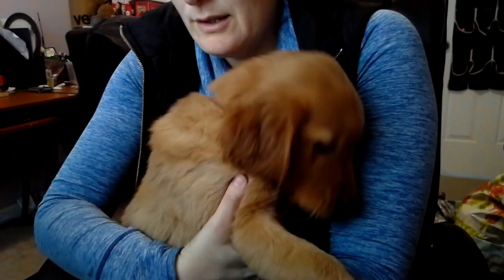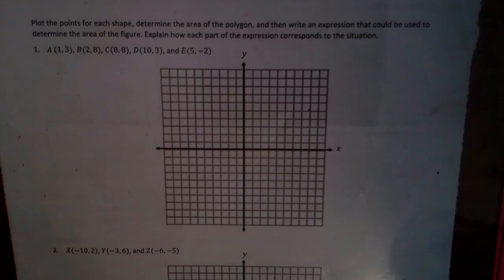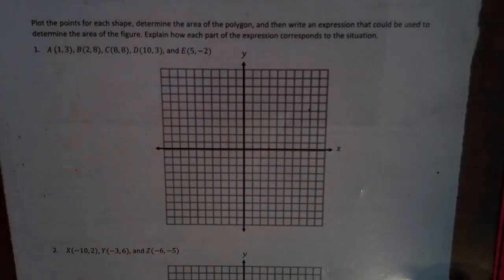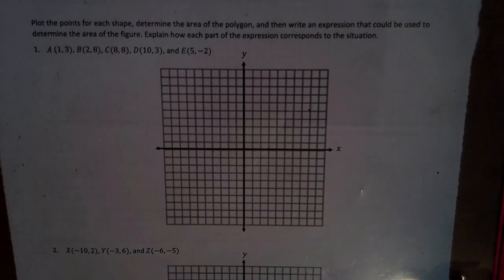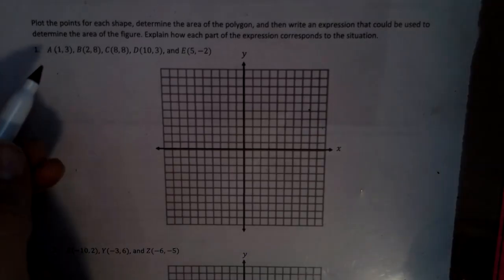That's another Brewski. All right, now that was of course super duper fun and Brewski is so cute. Now we have to plot the points for each shape, determine the area of the polygon, and then write an expression that could be used to determine the area. In other words, we have to figure out the area and use formulas for that.